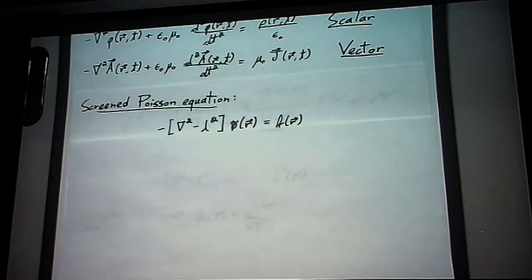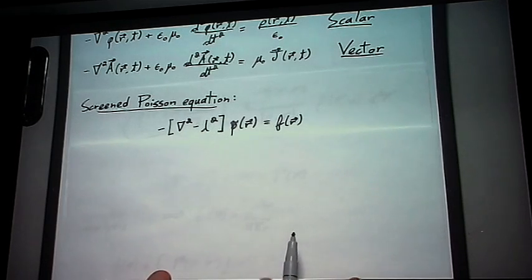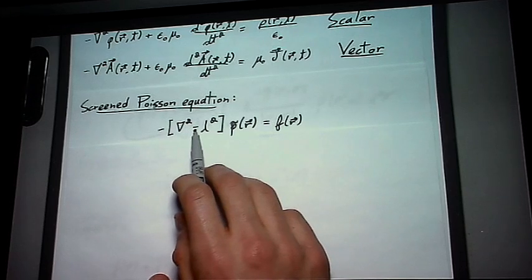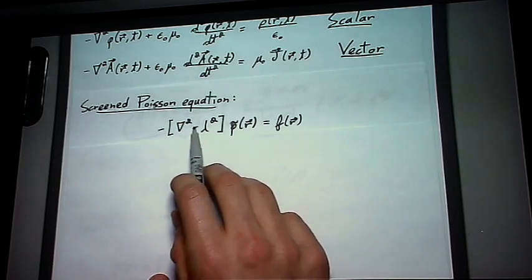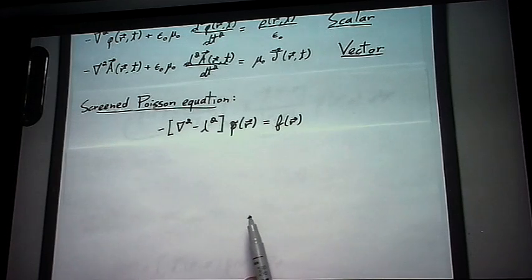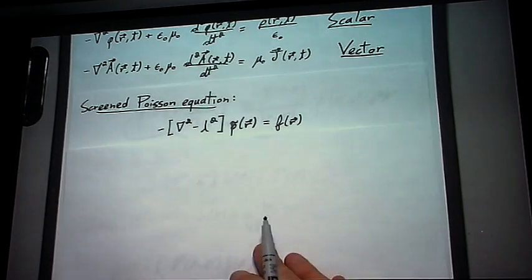So why did I take minus epsilon naught mu naught omega squared? That is because I needed an equation of this form. So I needed to get a minus sign right here. This is called a screened Poisson equation. It's an equation that we'll be able to solve using Green's functions.